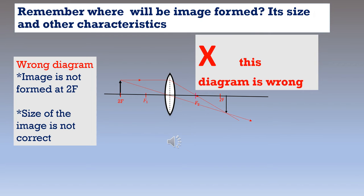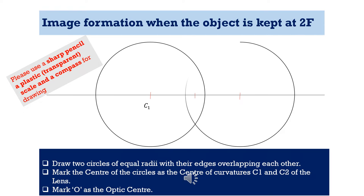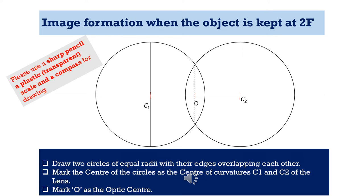To draw the ray diagram, the first step is to draw the lens and mark its center of curvature. For that we draw two circles of almost equal radii with their edges overlapping each other. Please make sure we are using a sharp pencil, a plastic or transparent scale for drawing lines, and a compass for drawing circles. Then mark the center of the circles — where you fix the pin of the compass — that will be the center of the circles, which you mark as C1 and C2.